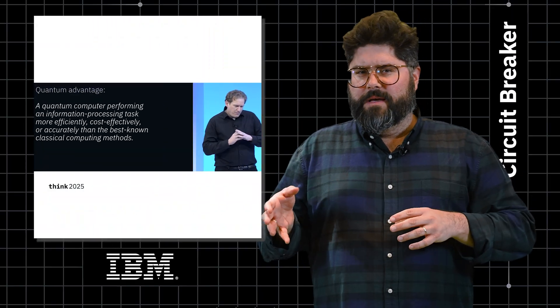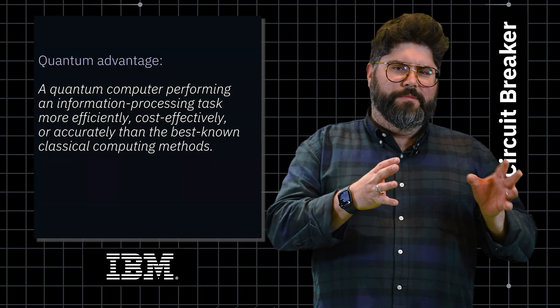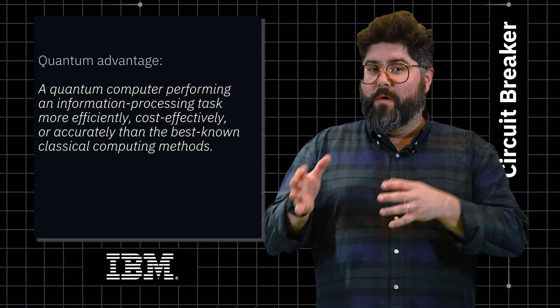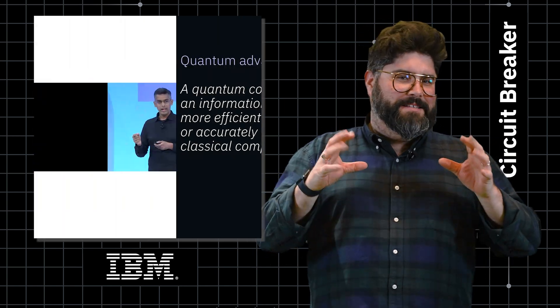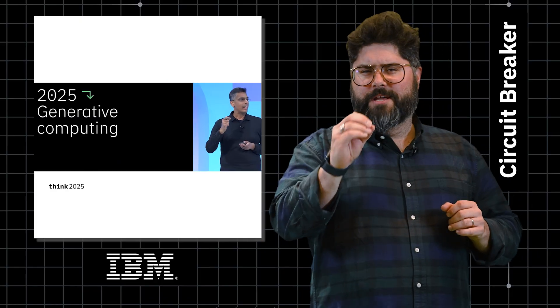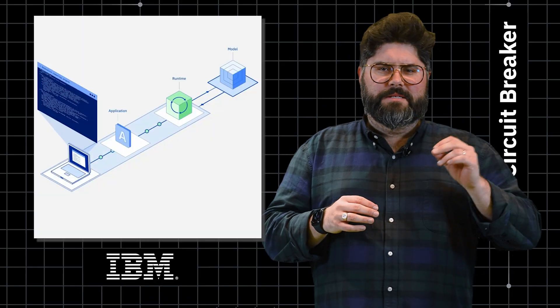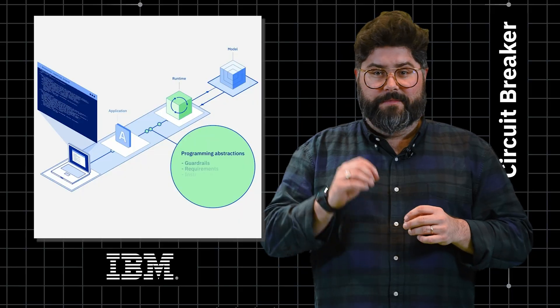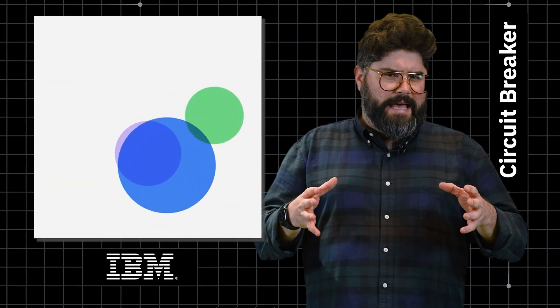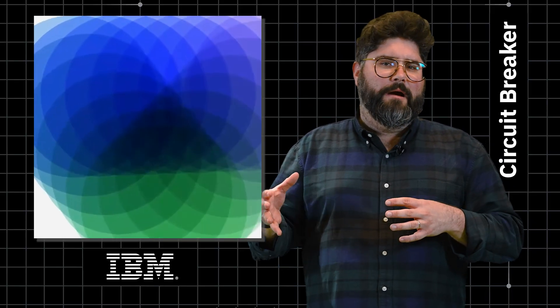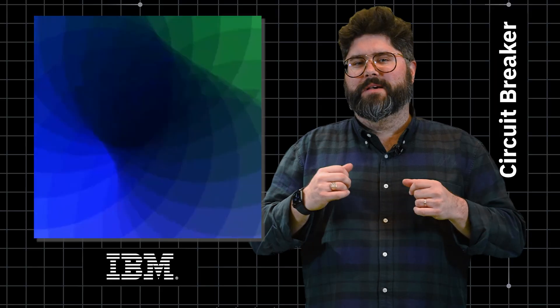There were two big areas of focus. The first was realizing the near-term goal of quantum advantage with quantum-centric supercomputers. The second revolved around a concept of generative computing, where complete systems are built around LLMs to serve them as efficiently as possible. Together, the group sees these two paradigms opening up powerful new ways of working.